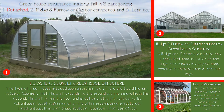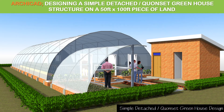Category three is the lean-to. These are usually small in scale and attached to people's houses or villages, with quick access straight from the house to the greenhouse. So today, using ArchiCAD, we shall be designing a simple detached concept greenhouse structure on a small piece of land — 50 feet by 100 feet.